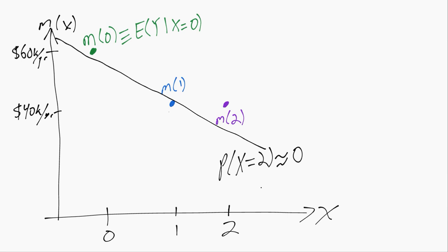So it no longer fits the green and blue exactly. It's drawn up a little toward that purple point, but it's still much closer to the green and the blue points than to the purple point because the purple point does not get a lot of weight, as there are not many individuals with two siblings in the population.